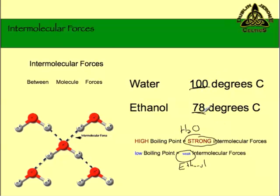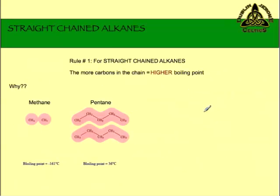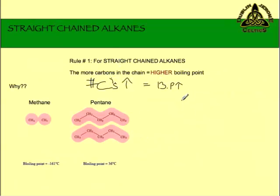There are two rules we need to know when it comes to alkanes. First rule: if we have a straight-chained alkane, the more carbons in the chain, the higher the boiling point. More carbons, higher boiling point. The explanation has to do with intermolecular forces — everywhere the molecules can touch each other, two different molecules, you'll get an intermolecular force.